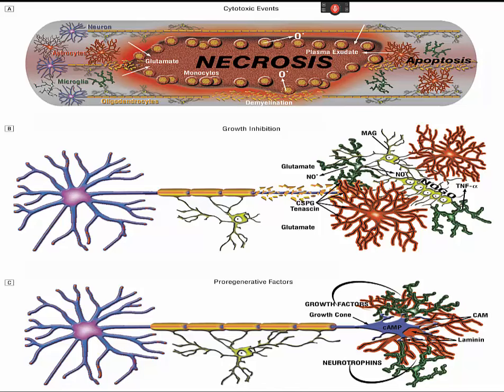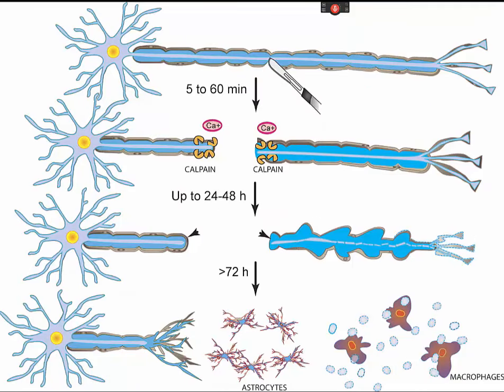ATP is a vital energy source that keeps cells alive. When someone sustains a spinal cord injury, cells run amok at the site and pour in, killing normal spinal nerve cells. Too much ATP overstimulates the neurons and causes them to die from metabolic stress. Changes in blood flow cause ongoing damage in and around the spinal cord, spreading from the injured area to adjacent uninjured areas and then throughout the body.